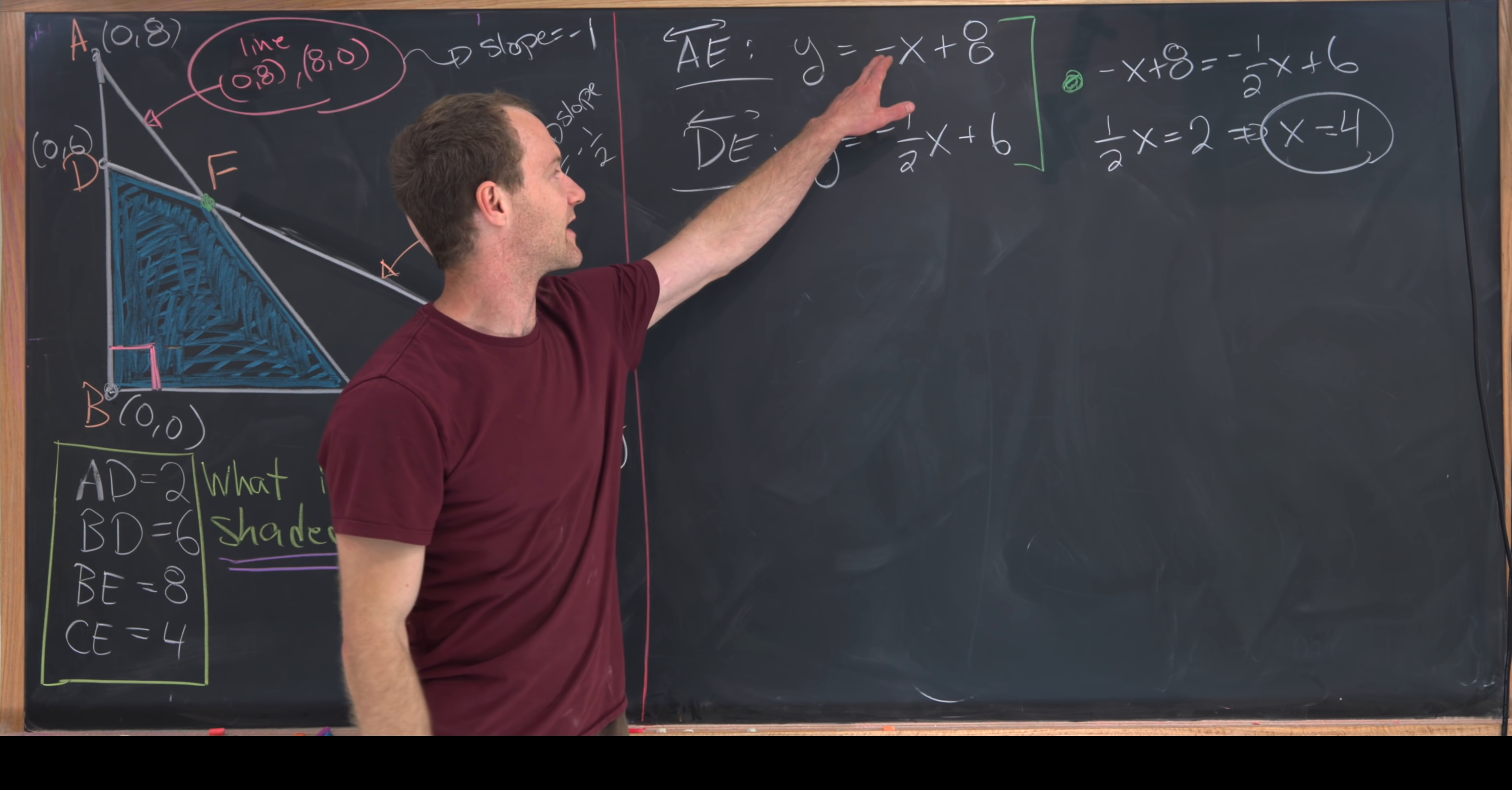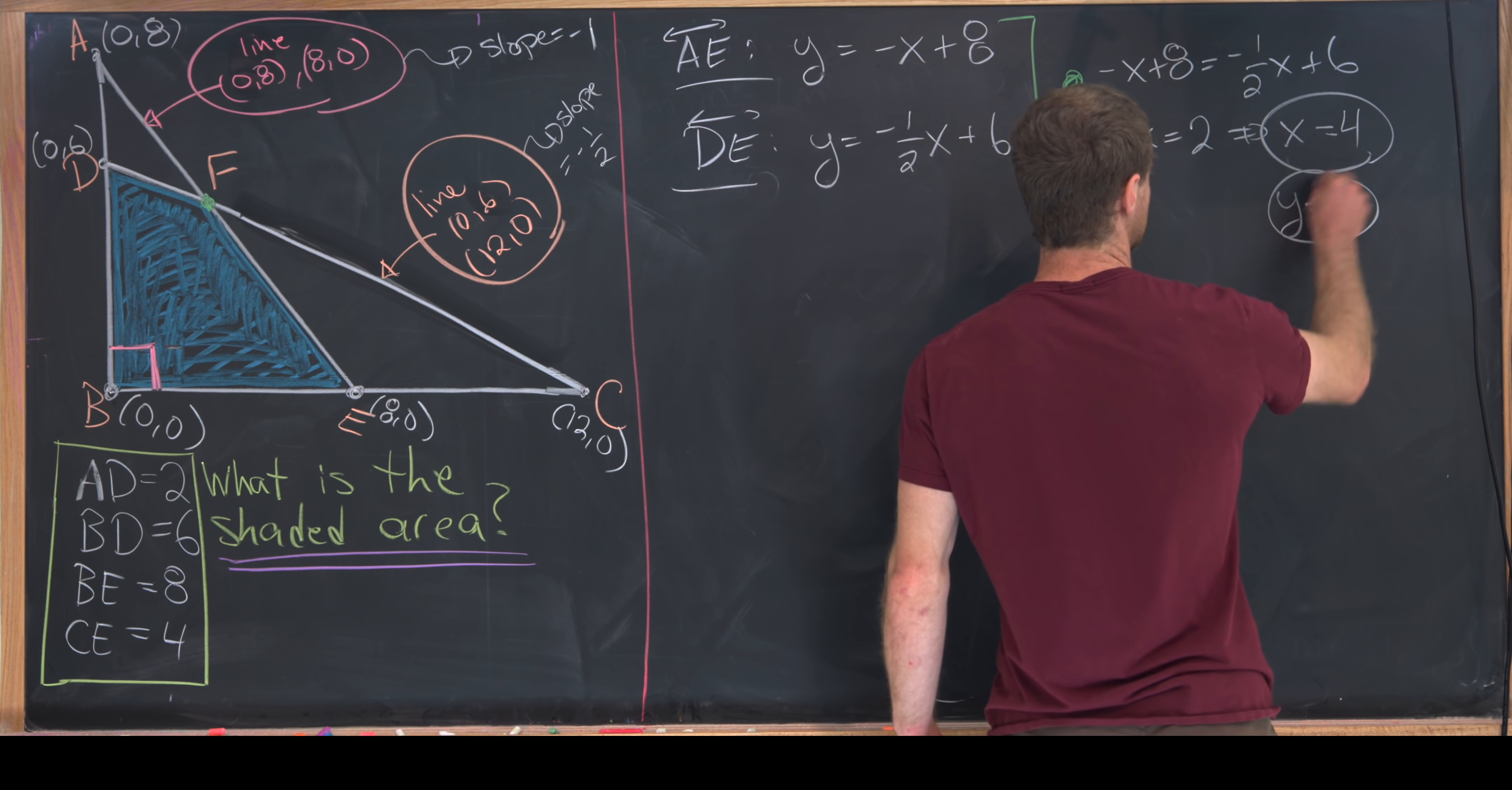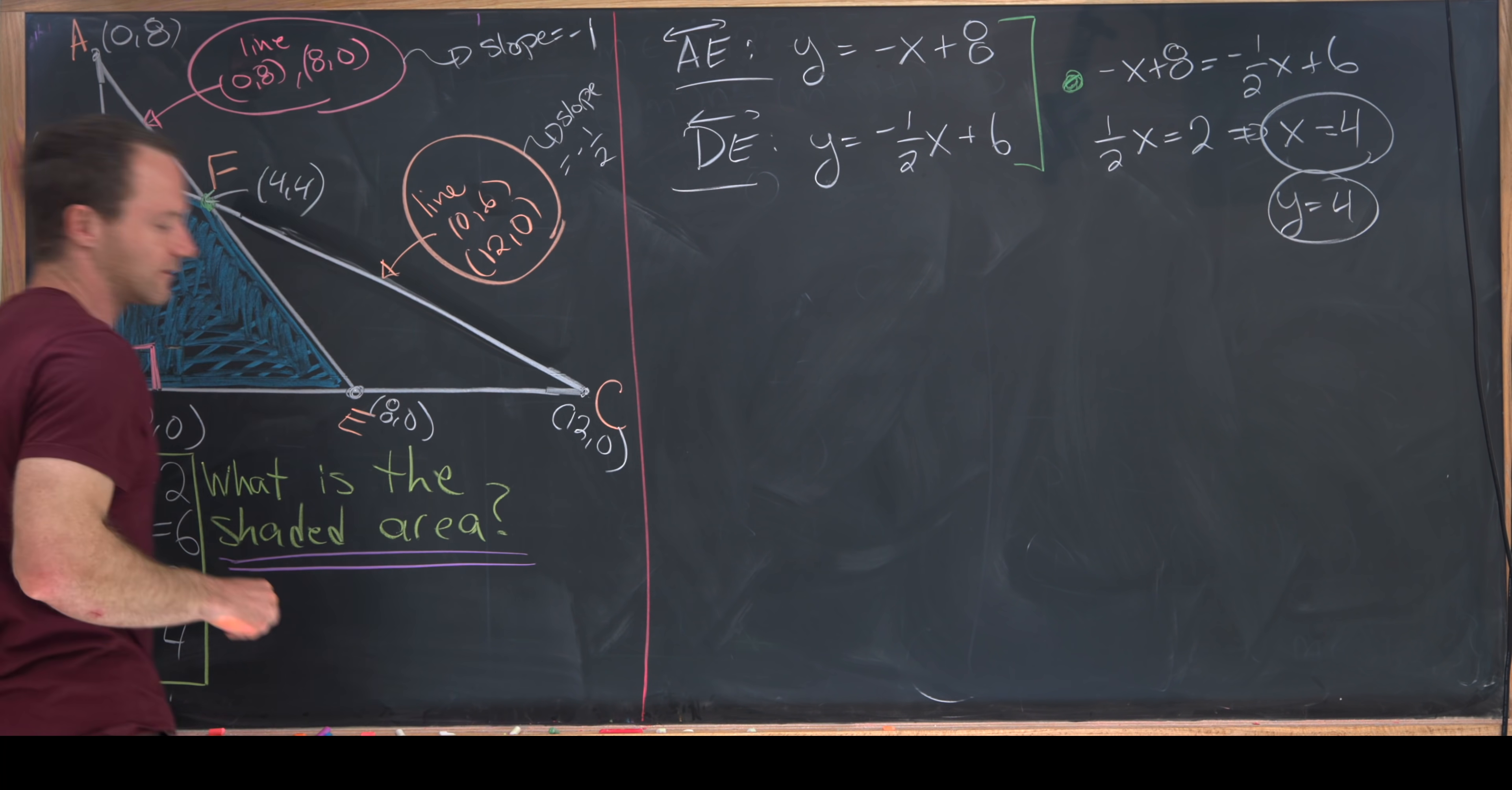Now we can plug that back either here or here. We'll get the same thing obviously, and we'll see that y is also equal to 4. So that tells us that this point right here is the point (4, 4).